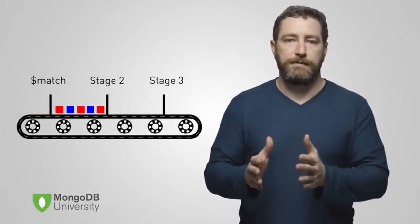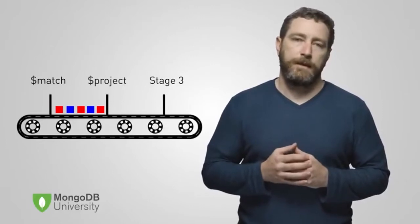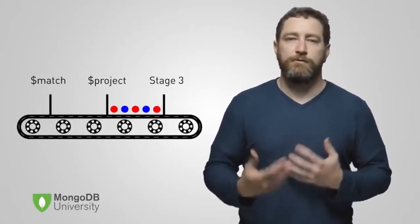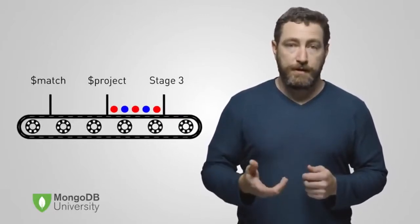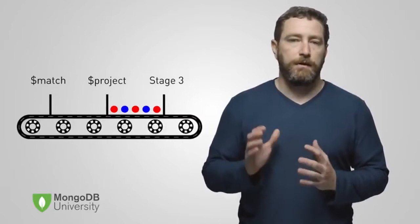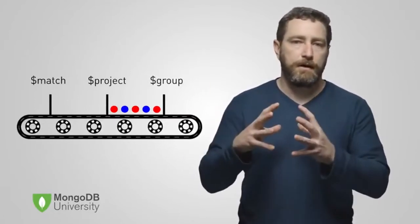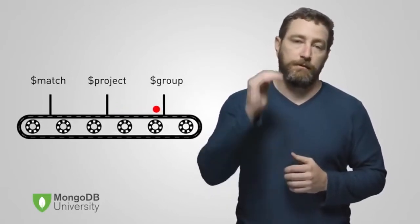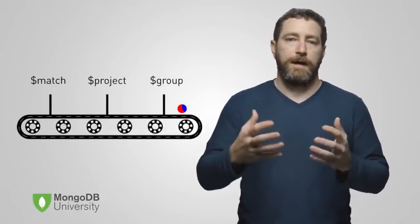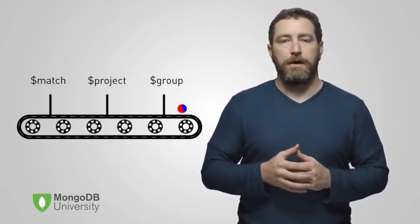They flow through our pipeline and enter the second stage. In this example, we'll call this stage Project. We've set this stage up to transform our squares into circles. This is a small representation of the power the aggregation framework offers — we can transform our data in almost any way we desire. The next stage is called Group, and here we have configured the stage to gather all the documents that are flowing into it and produce a single document that gives us the ratio of red to blue circles. That's a high-level overview of what pipelines are.